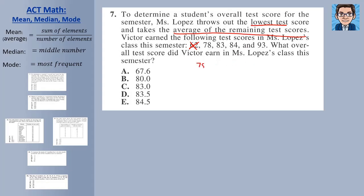Then we're going to take the average, so we've got to add up 78, 83, 84, and 93. We add those up, and we get 338. We're going to divide by the number of elements that we have, so we've got four. When we divide that out, we get 84.5, or choice E for this.